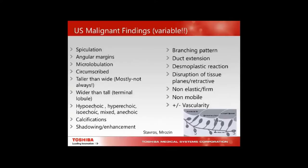Most breast cancers were thought to be hypoechoic, but liposarcomas and breast metastases from melanomas can be hyperechoic. Some can be isoechoic — these are harder to see. Anechoic ones tend to be more aggressive cancers and can hide among cysts.